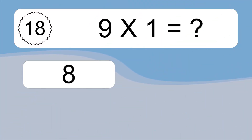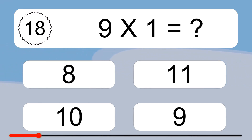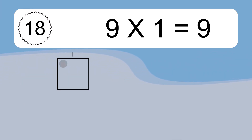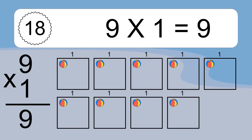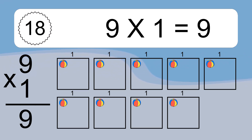9 times 1 equals what? 9 times 1 equals 9. We have 9 boxes, and each box has 1 colorful ball inside. If you count all the balls in all the boxes together, you will have 9 times 1 balls. This equals 9 balls.